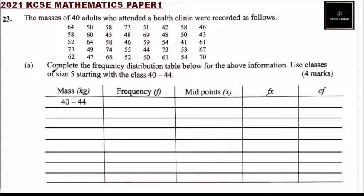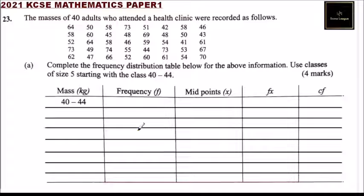Part A: we have completed the frequency distribution table for the above information. We use classes of size 5, starting with the class 40 to 44. The table includes the frequency — the number of times data appears within each class — the midpoint, the product of frequency and midpoint (fx), and a cumulative frequency column.